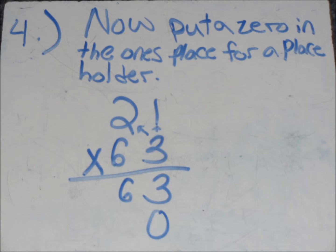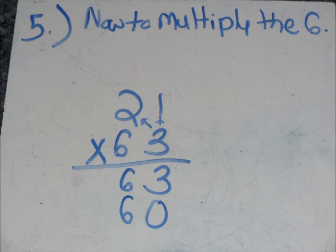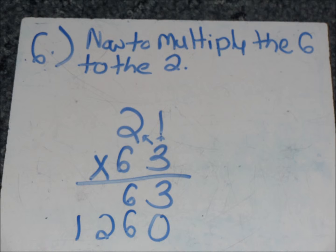Now put a 0 in the holding place, underneath the 3. Now to multiply the 6. 6 times 1 is 6. Now, 2 times 6 is 12.